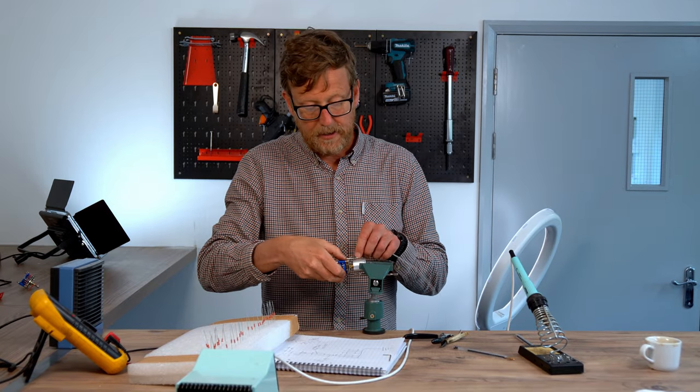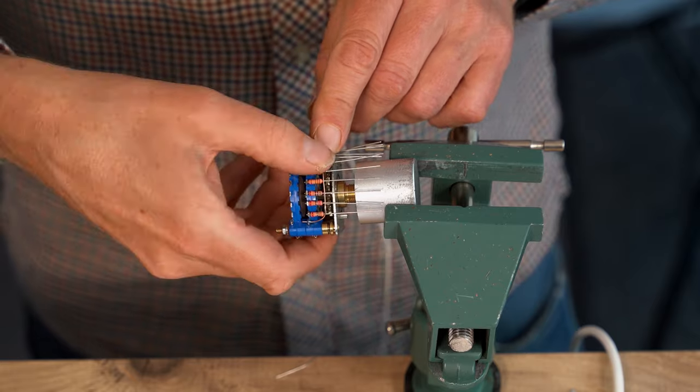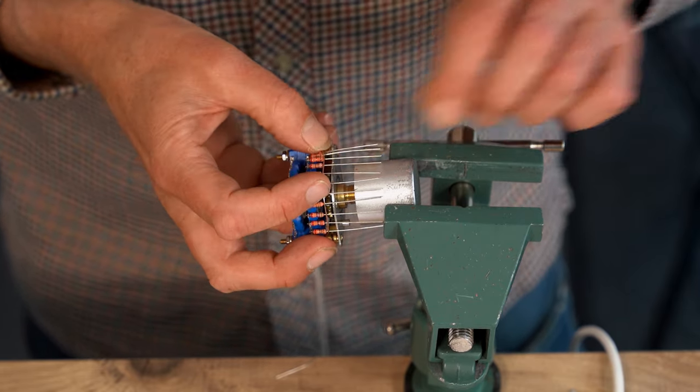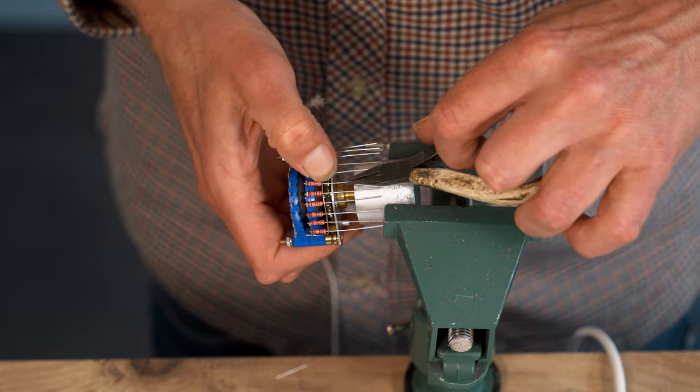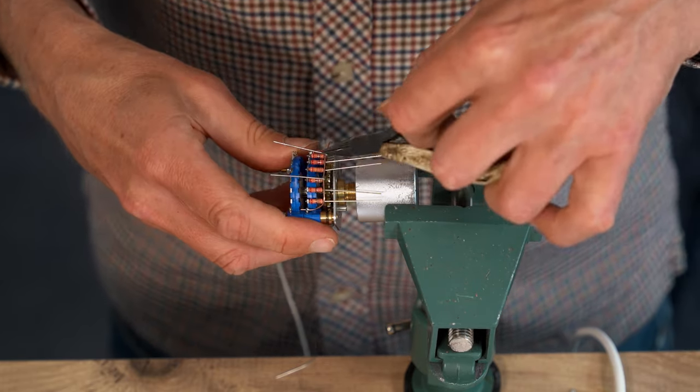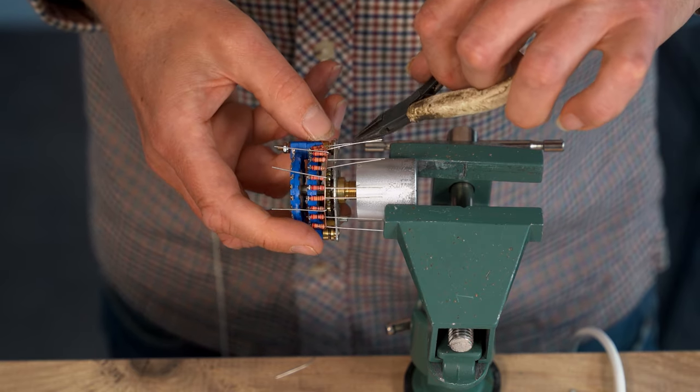Now we're going to connect the earth wire to all the lead outs, the other lead outs of the resistor. So I generally just do a couple just to hold it in place. Solder them in, then I'll do the rest. So that one, that one, this one, and the last one.